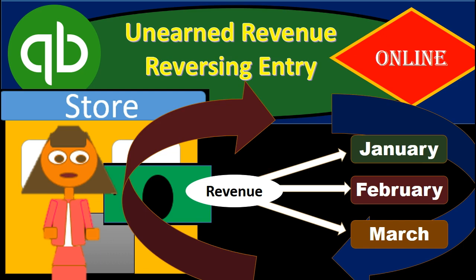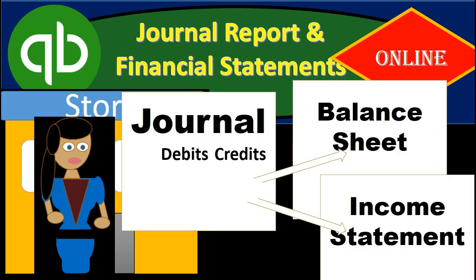We will have a reversing entry for the unearned revenue, which will be made the first day after the adjusting process. We'll also have the journalized report and financial statements, which we can use to see how the financial statements have been adjusted through the adjusting entry process and the journal entries.